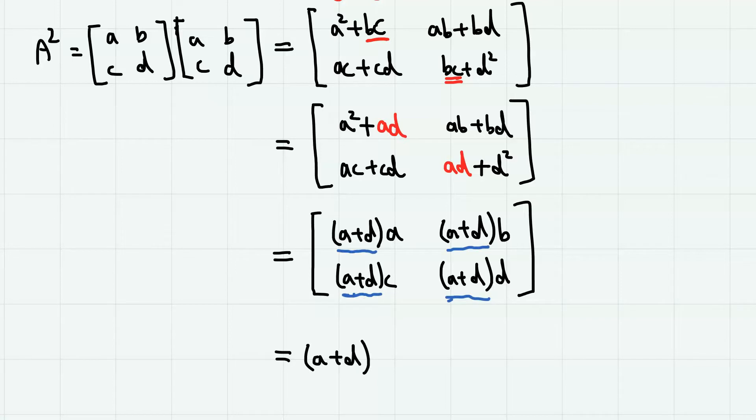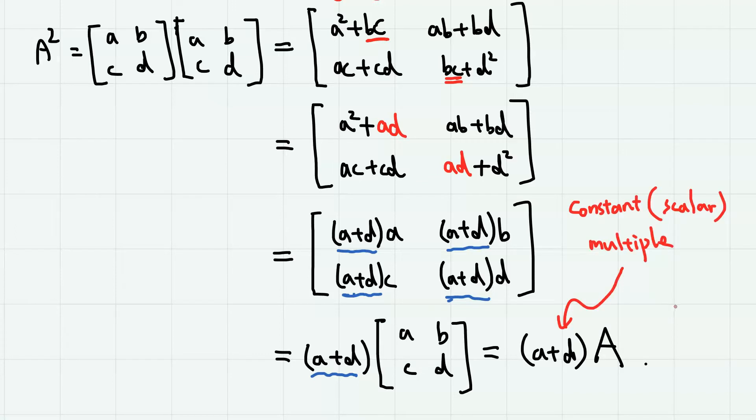So we can extract this A plus D outside of the matrix and write ABCD, which is A plus D times matrix A. Therefore, A squared is expressed as the constant multiple or scalar multiple of matrix A.